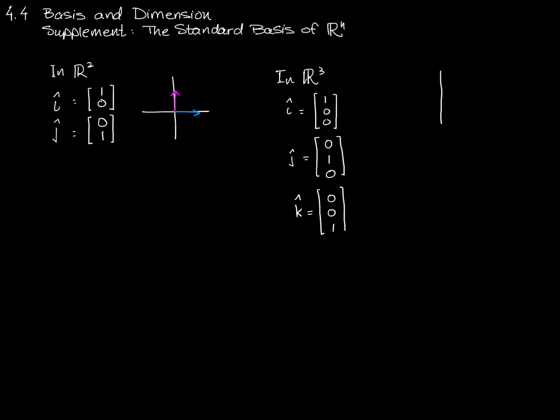In R3, we have i-hat, j-hat, and k-hat. i-hat goes from zero to one in the x-direction, j-hat goes in the y-direction, and k-hat goes in the z-direction.